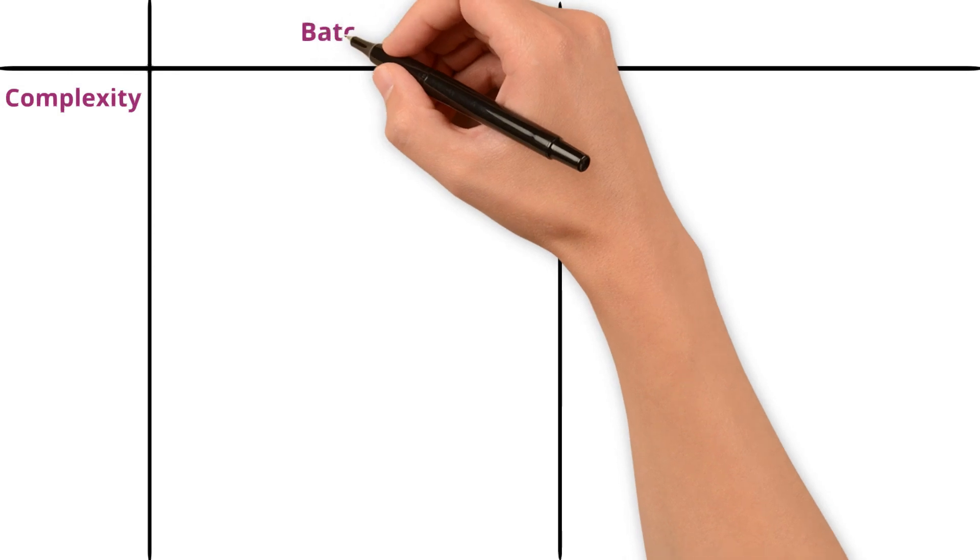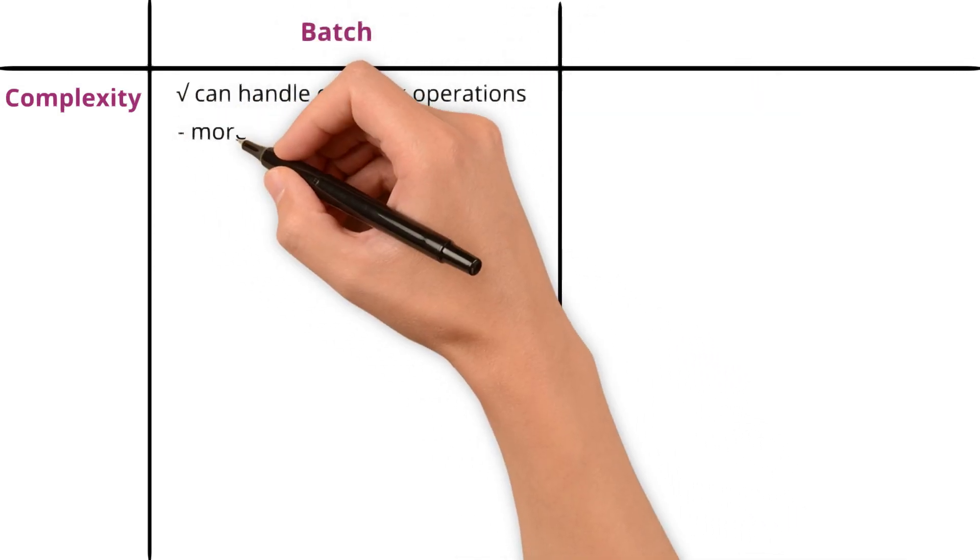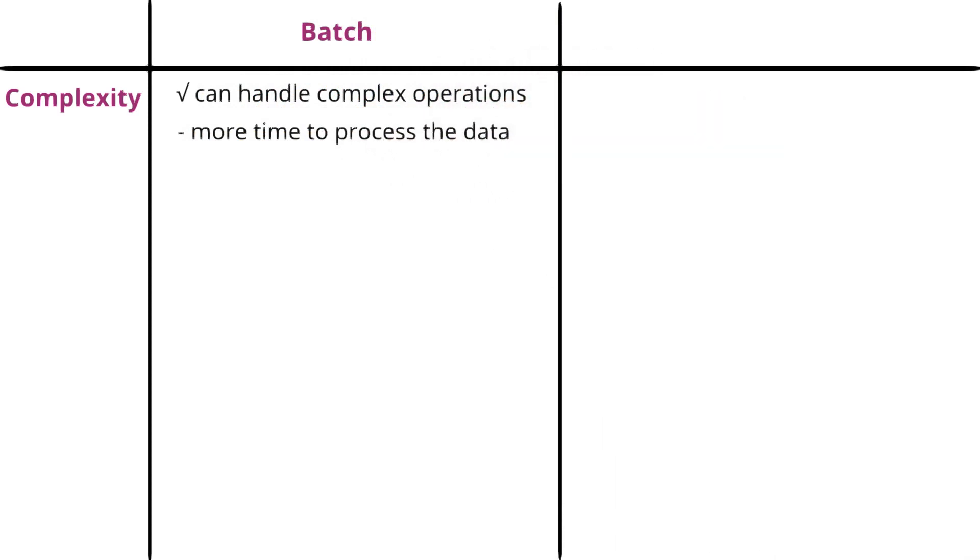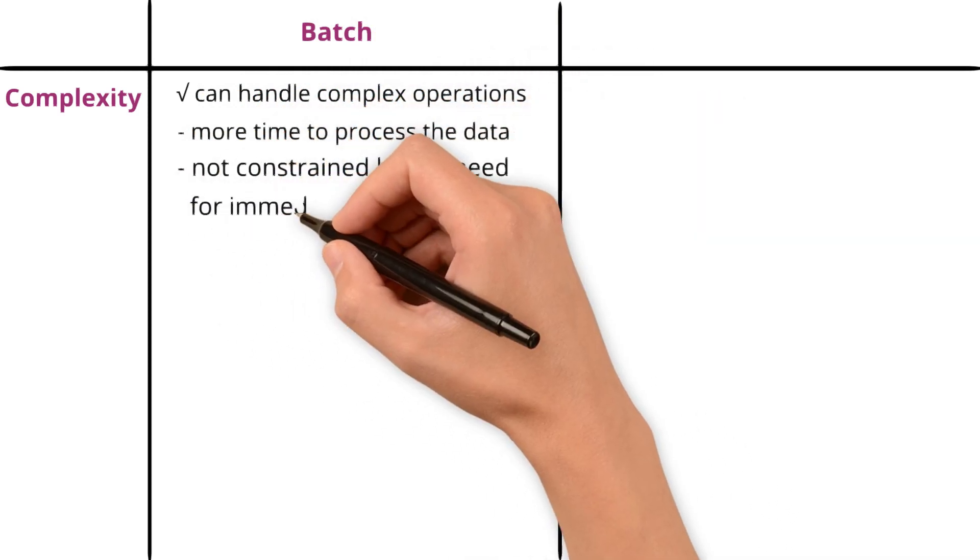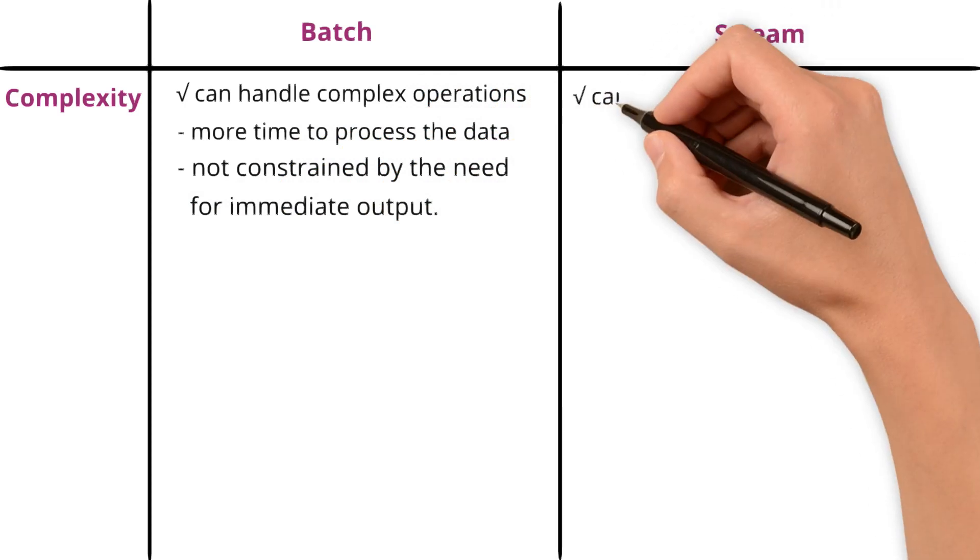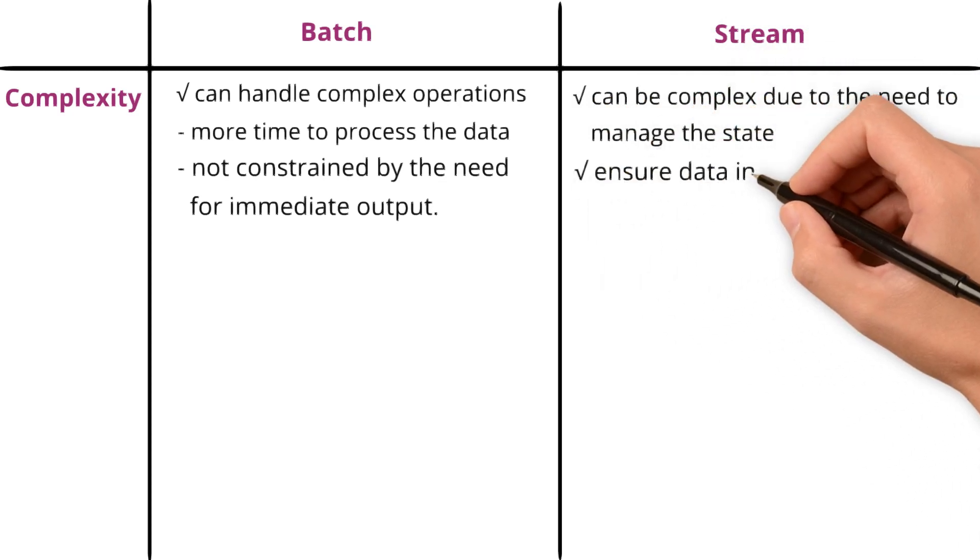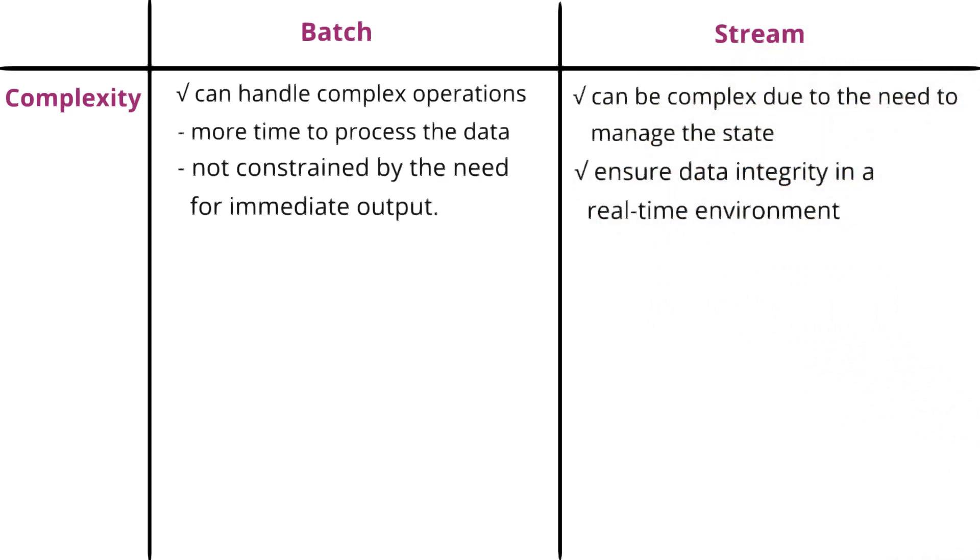Complexity. Batch systems can handle complex operations as they have more time to process the data and are not constrained by the need for immediate output. In contrast, stream systems can be complex due to the need to manage the state and ensure data integrity in a real-time environment.